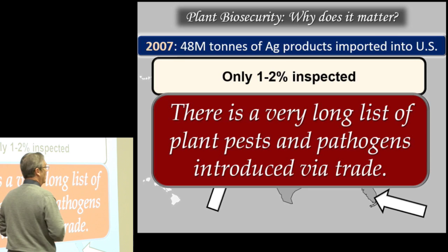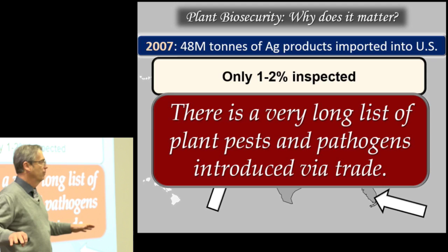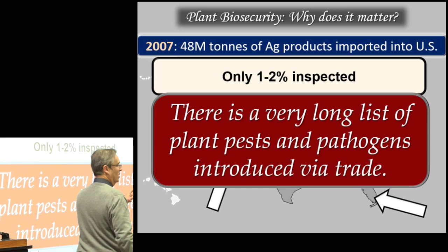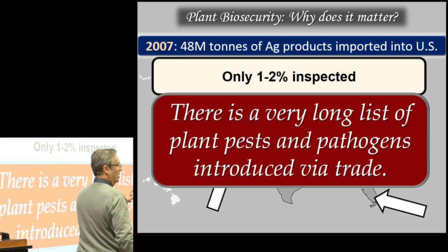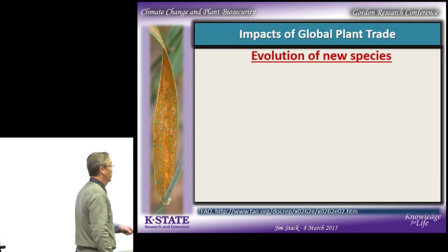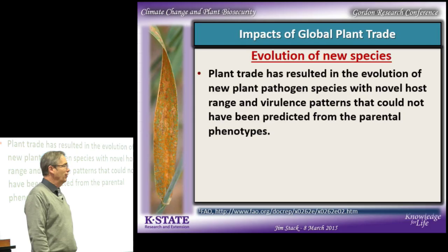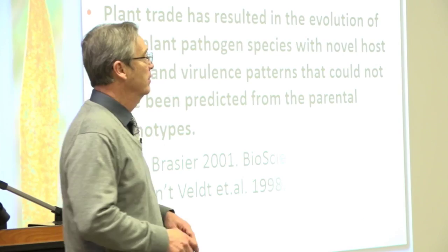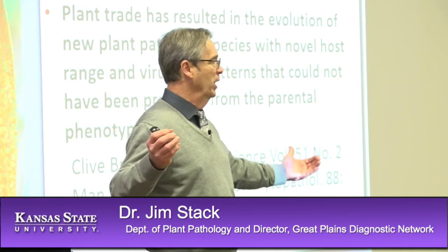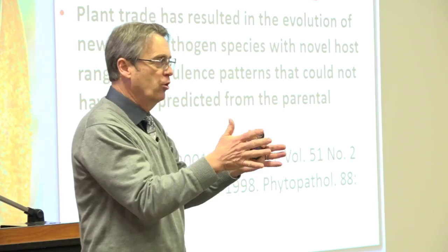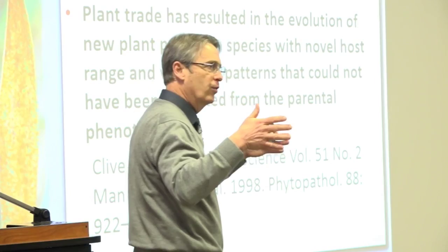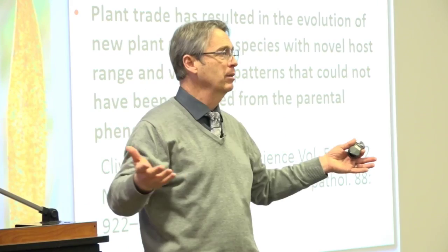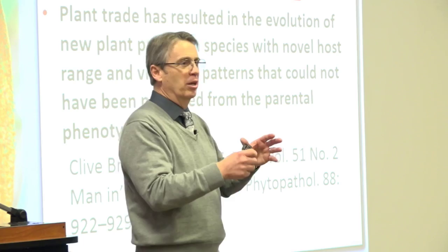The problem with risk-based inspection is that a lot of these things jump hosts when they go from one place to another. Plant trade has resulted in the evolution of new plant pathogen species with novel host range and virulence patterns that could not have been predicted from the parental phenotype. For instance, they had a shipment of nursery plants from South America and from Africa into the UK. These plants ended up in the same nursery adjacent to each other, each with a species of the pathogen Phytophthora, two different species with different host ranges. They shouldn't interact — but they hybridized, formed a new species, and the host range and virulence pattern could not be predicted by the parental phenotype. It was pathogenic to an entirely different host.